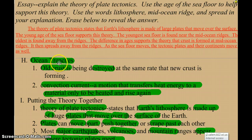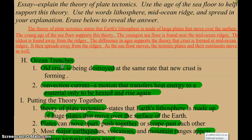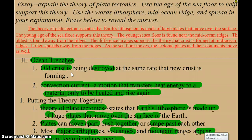On the other side of the Earth, away from the spreading zones, are trenches. In the trenches, the old crust falls in, gets destroyed, gets pushed down into the Earth, and melted and turned back into magma in the mantle — then comes back up later on. This is convection current motion.